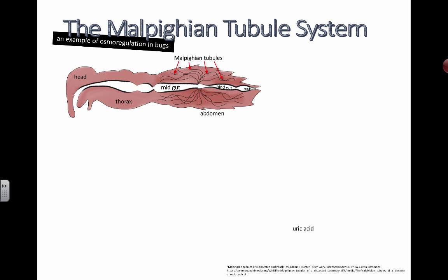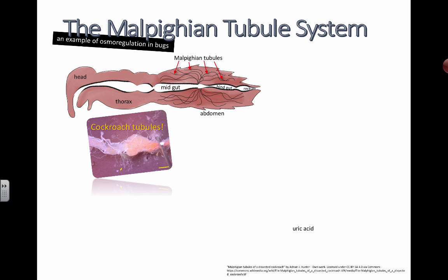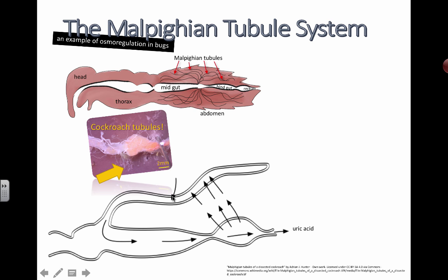Here's an image showing what cockroach tubules actually look like. If you ever find a cockroach and feel like you want to dissect one of these things — if it's already dead, don't kill it for the purpose of doing this — maybe you can do a little bit of research. There's a size bar to let you know how big we're talking about. Here's a close-up image, and going a little bit closer, this is actually one of the Malpighian tubules just drawn for some understanding.